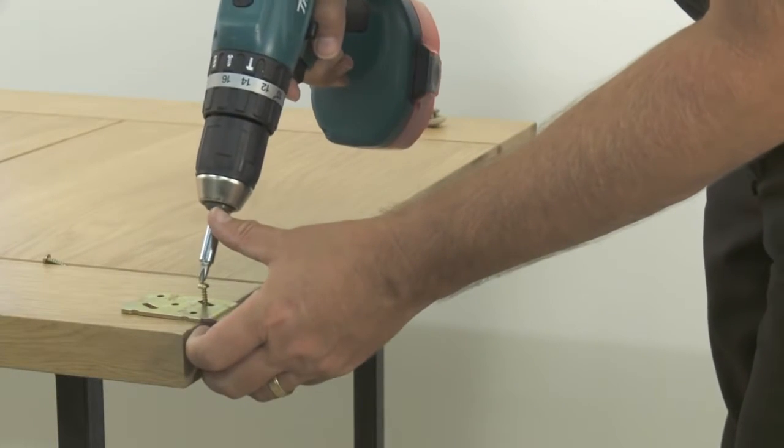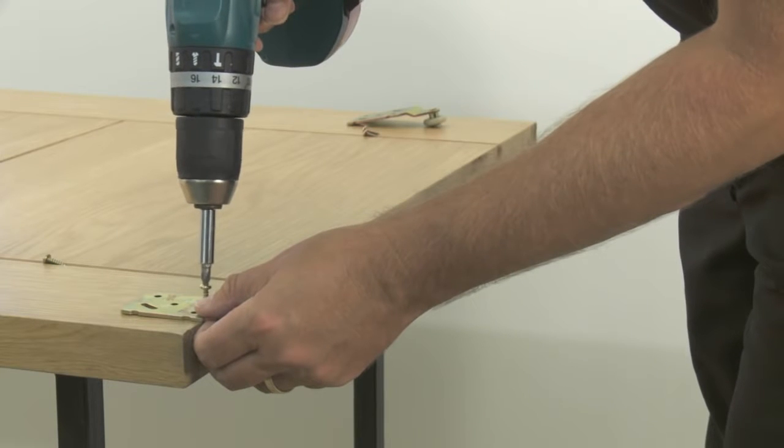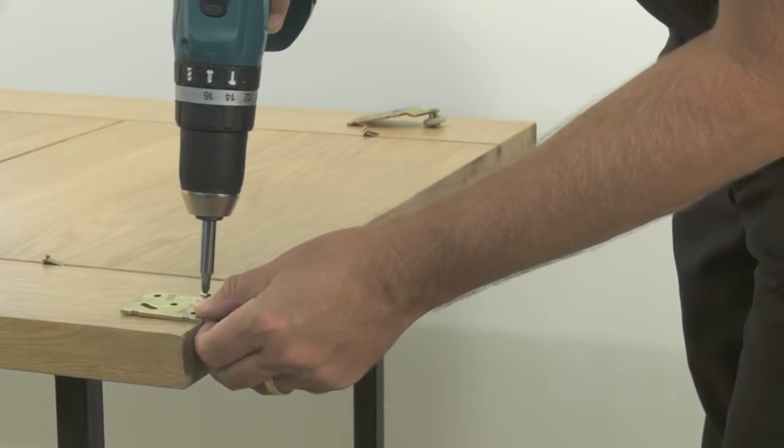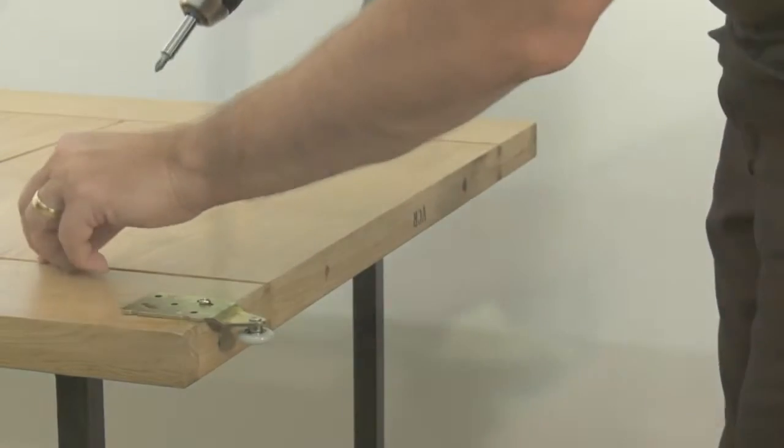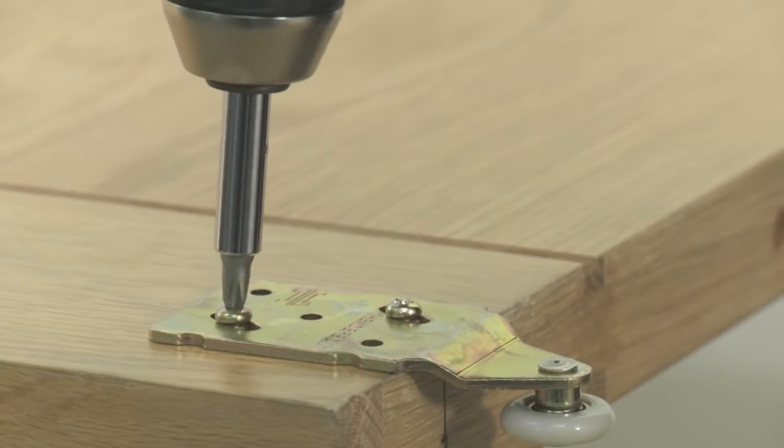Then, using an electric or manual screwdriver, attach the hangers to the door using the screws provided in the kit, ensuring that the wheel is facing the correct way.